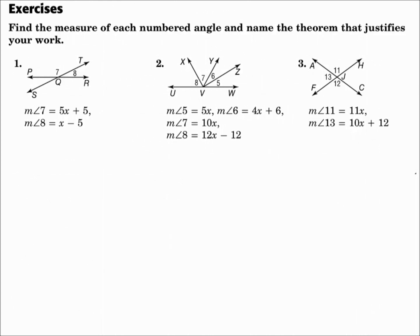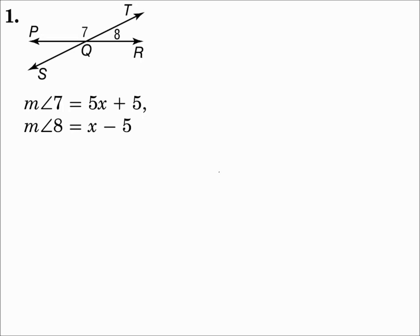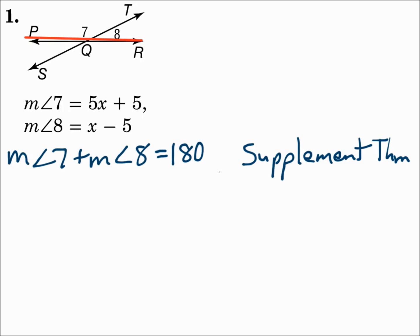Find the measure of each numbered angle, and name the theorem that justifies your work. Number one: I've got angles 7 and angle 8. They form a straight line when you put them together, which means they're a linear pair. If they're a linear pair, then their measures add up to 180 — that's the supplement theorem. Now let's substitute in and solve for x, then we'll find the angle measures.